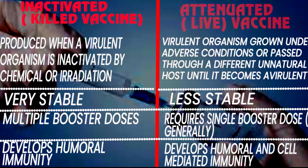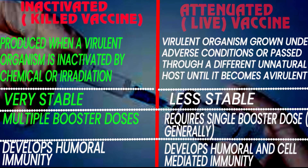An inactivated or killed vaccine is produced when the virulent organism is inactivated by chemical or irradiation. It is quite stable, requires multiple booster doses, and produces a humoral immune response.